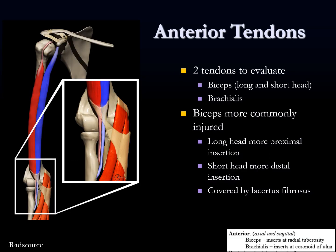We're going to start with tendons. There are two main structures to evaluate for tendons in the anterior elbow: the biceps, which has a long head and a short head, and the brachialis. The long head biceps tendon — which we know from shoulder MRI as going through the bicipital groove — has a slightly more proximal insertion on the radial tuberosity. The short head comes from the coracoid process and inserts more distally.